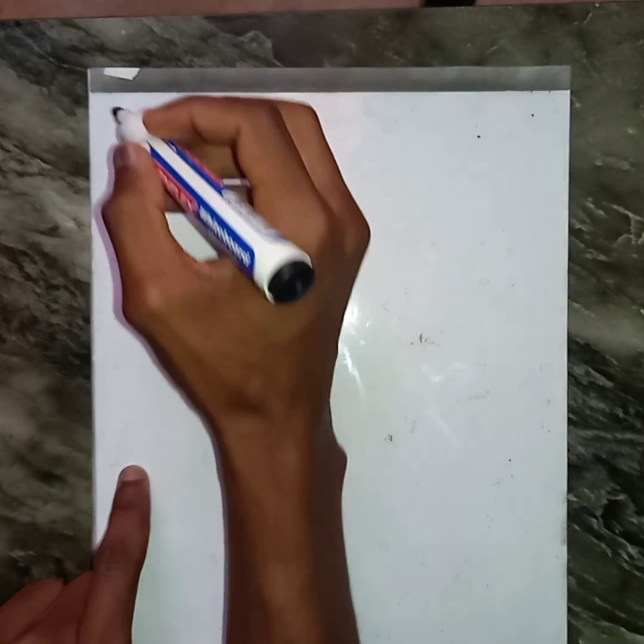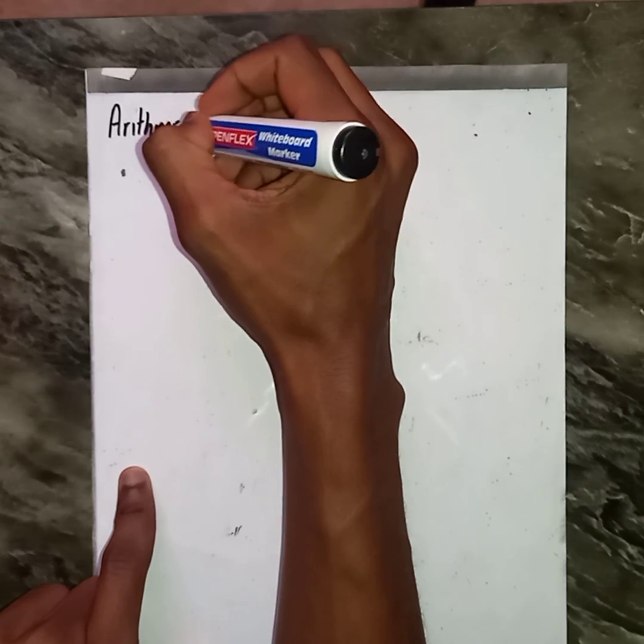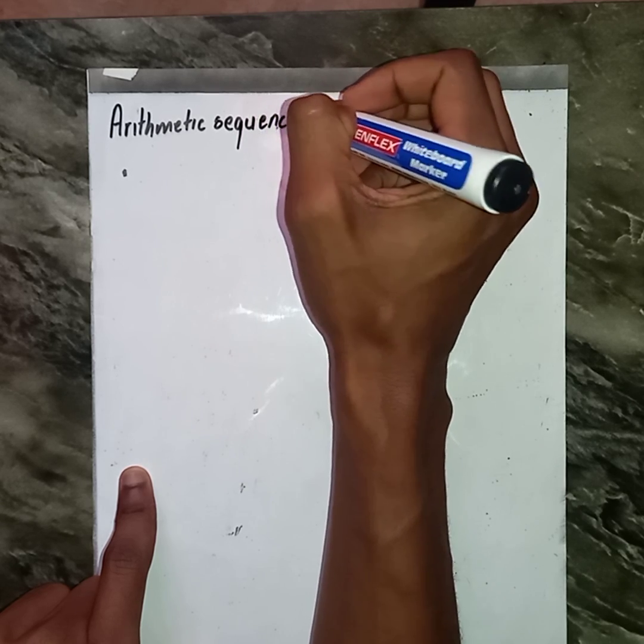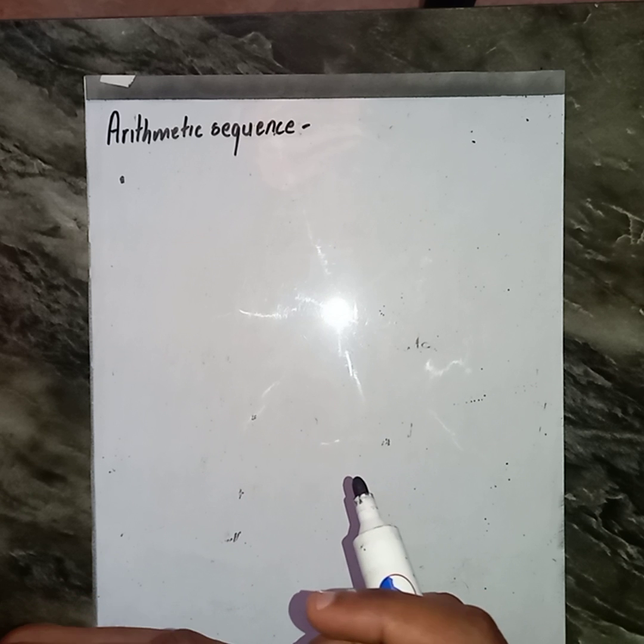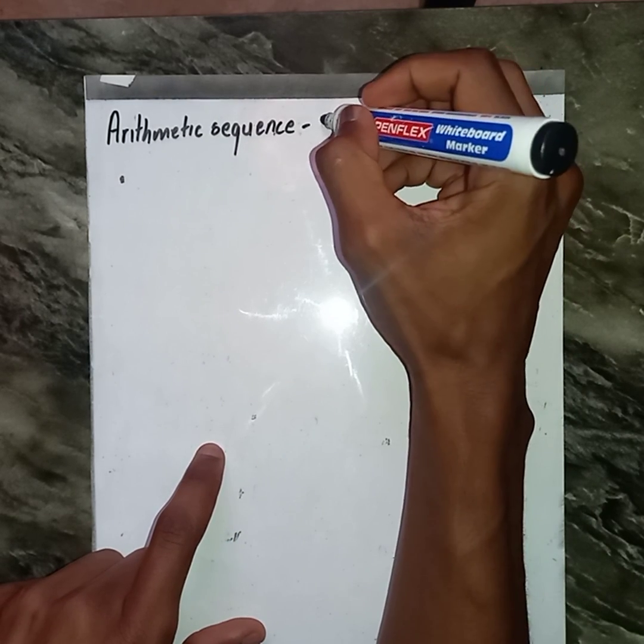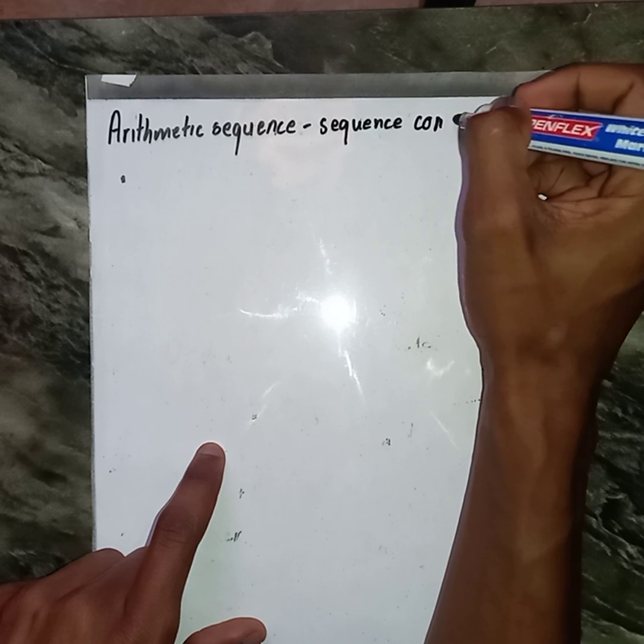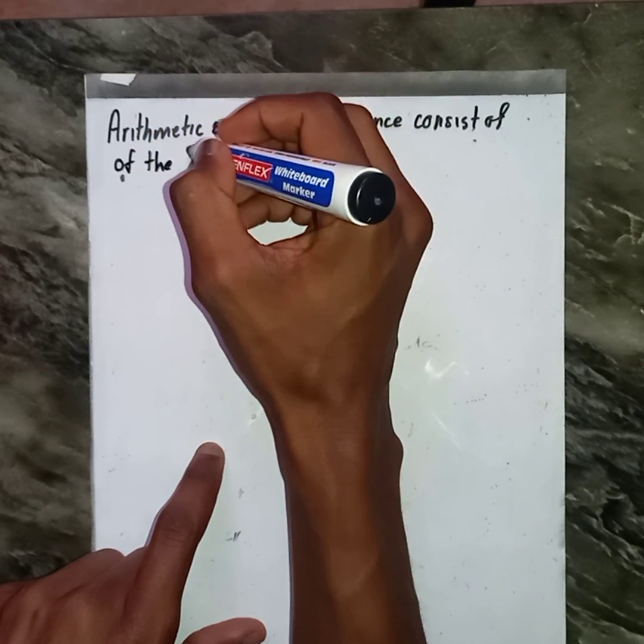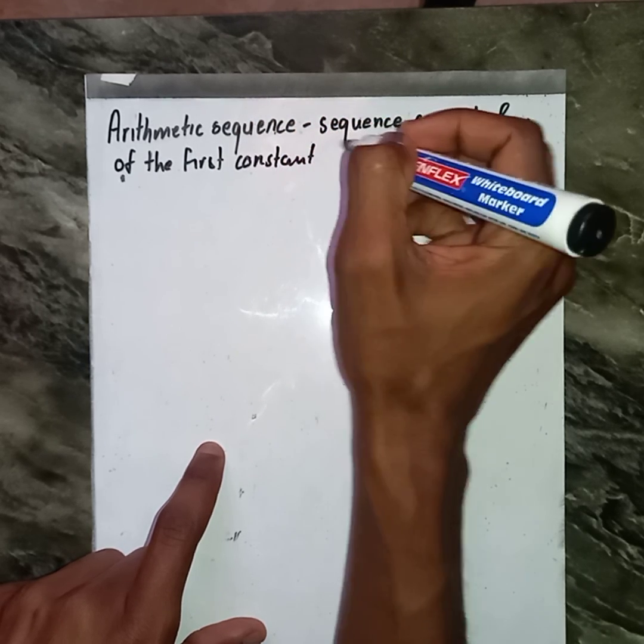Today we are going to do the arithmetic sequence. By definition, the term arithmetic sequence has to do with the sequence that consists of the first constant difference.